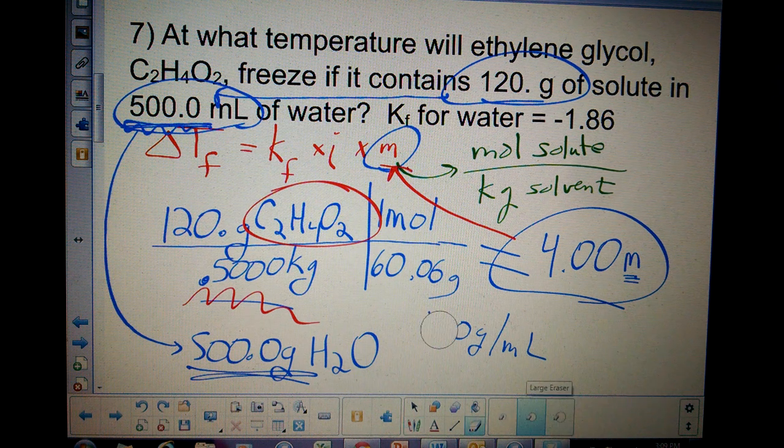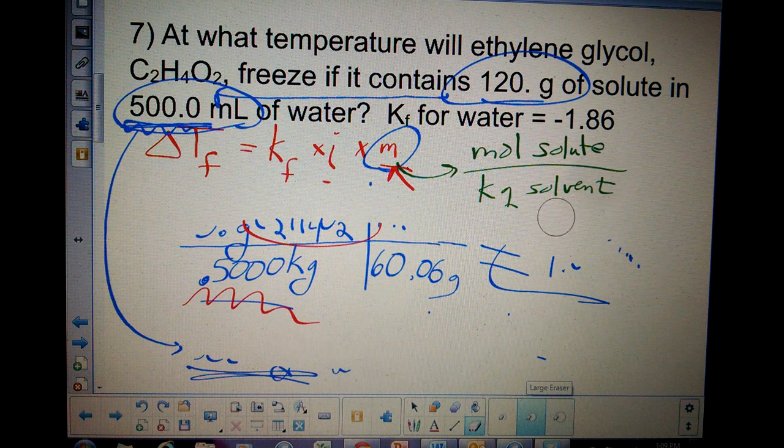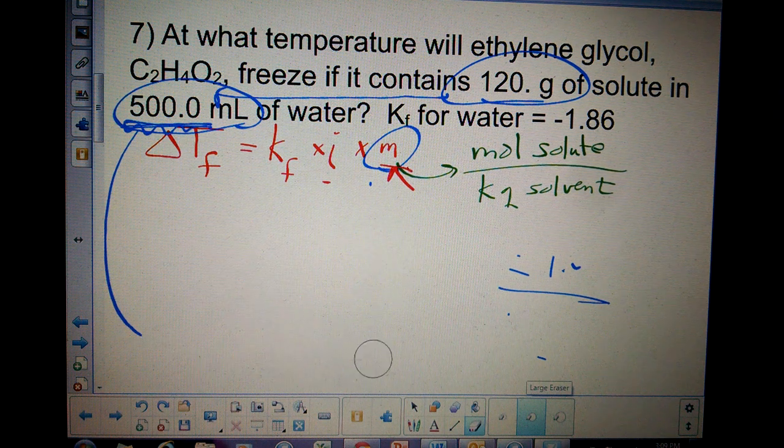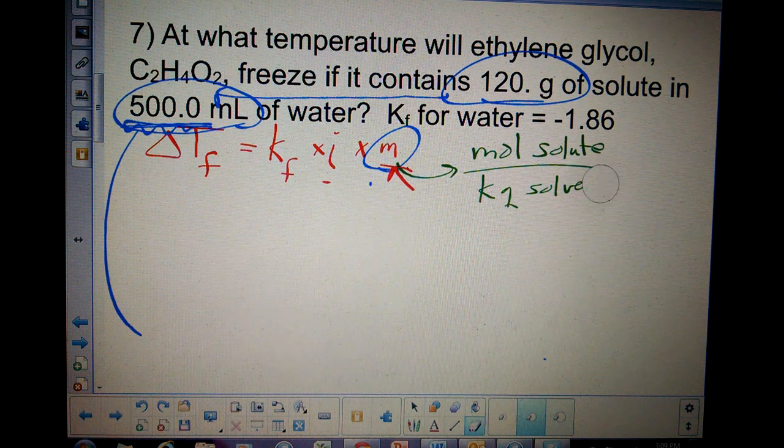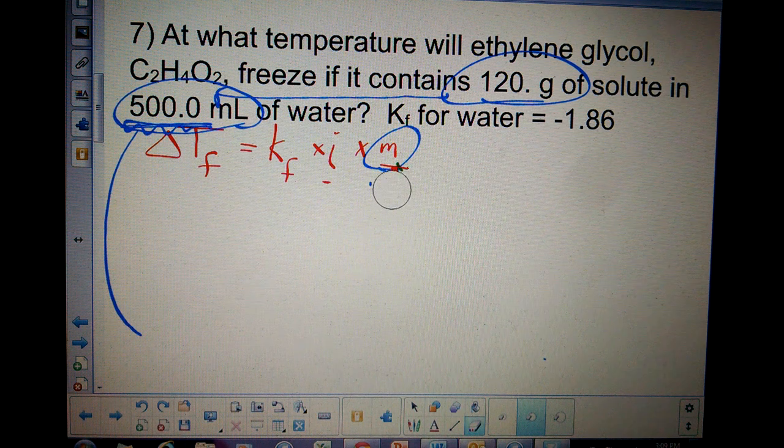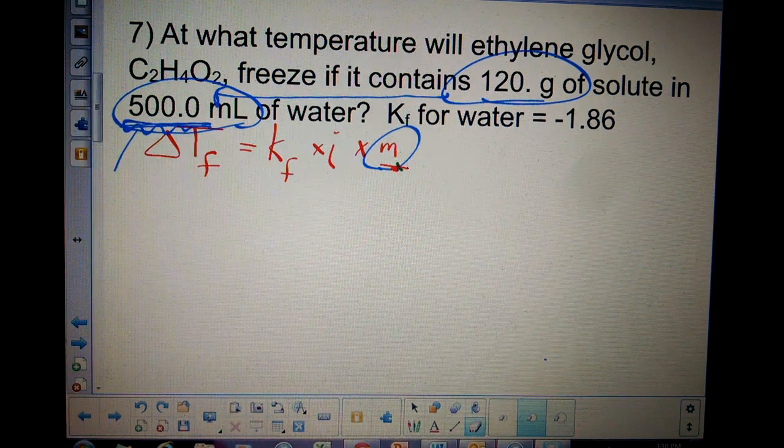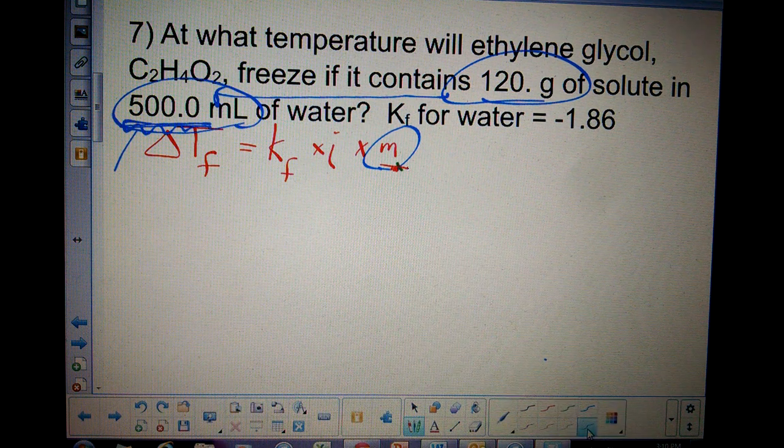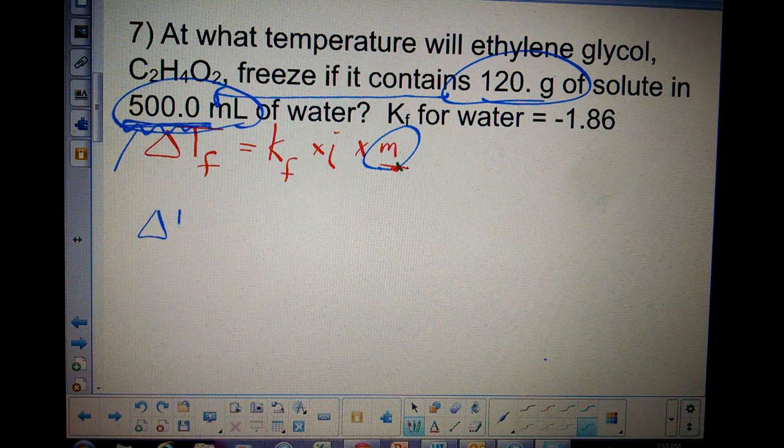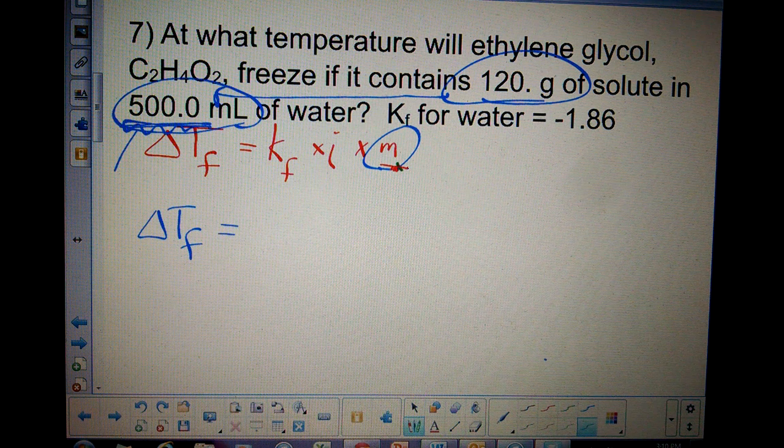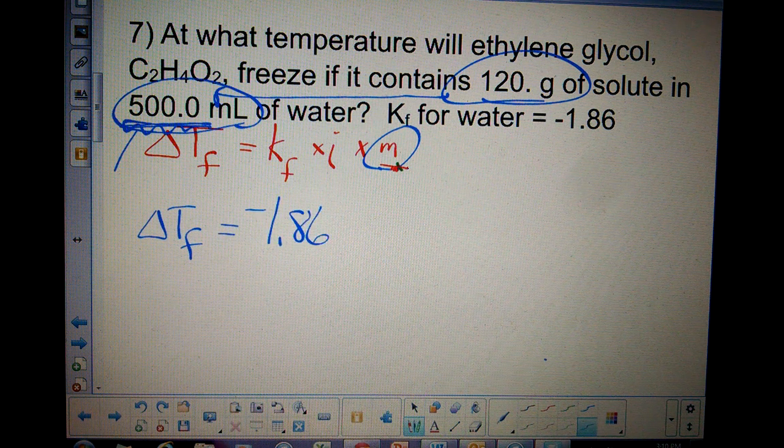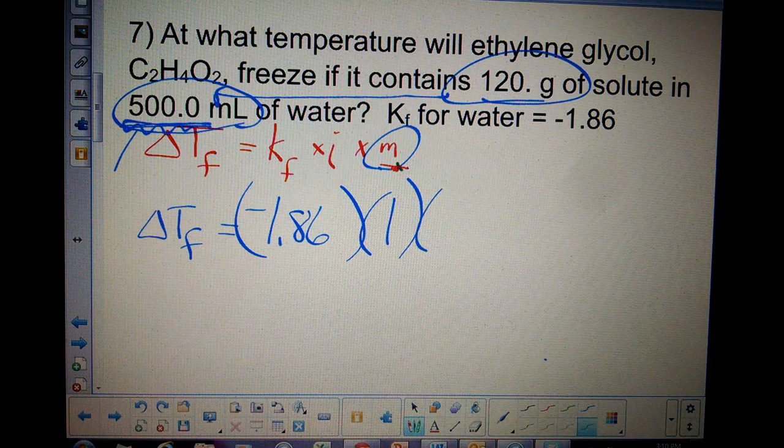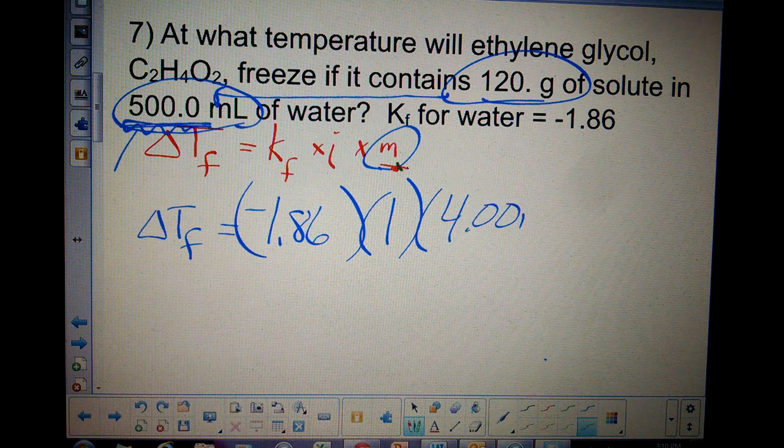I'm going to erase some of this. We're going to get an answer. Let's plug it all in. Delta Tf equals negative 1.86 times 1 times 4.00.